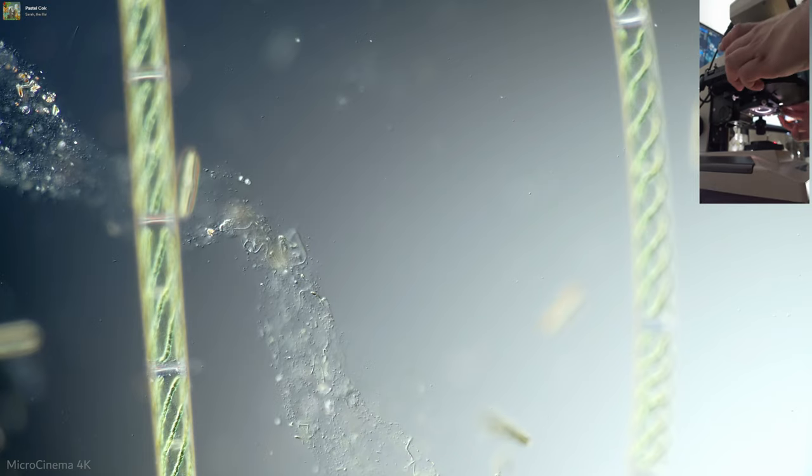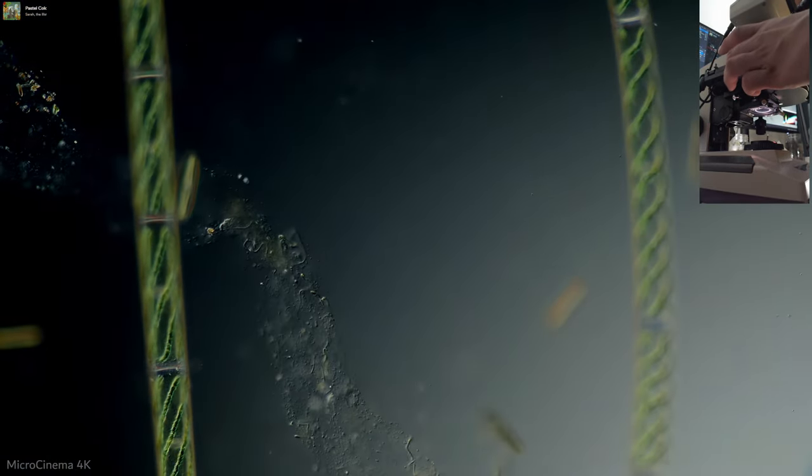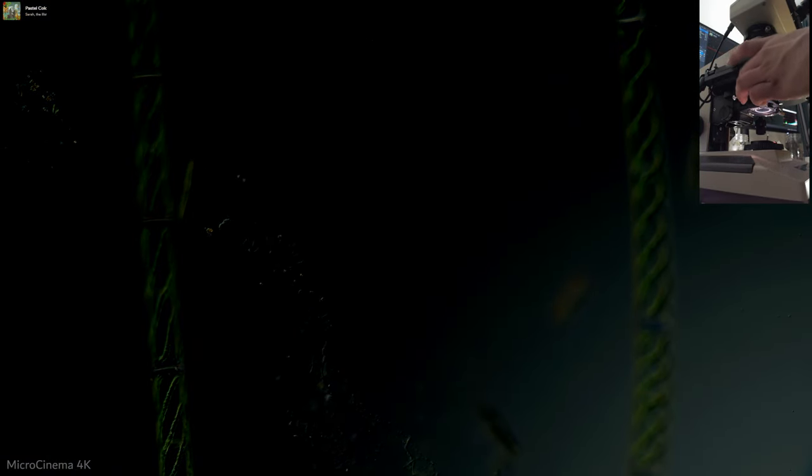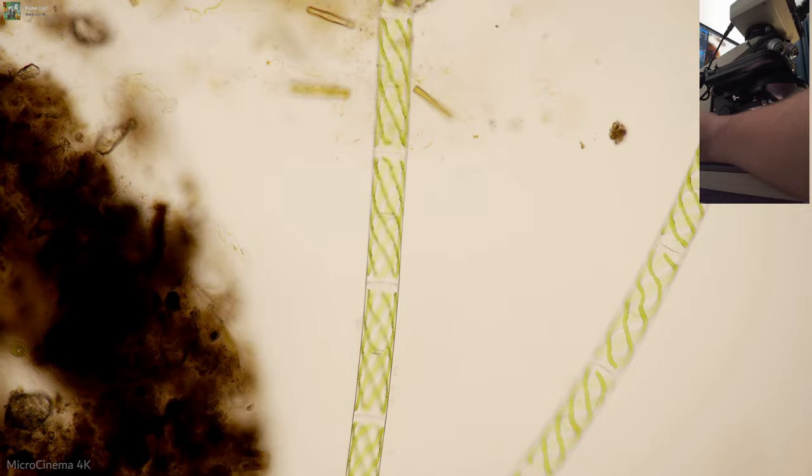Okay, go back to... we'll go back to Brightfield to finish things off. Switch back to the Brightfield position on the condenser. We're already in the right position with the polarizer. Just need to pull the analyzer out and bring our iris down a little bit to get to Brightfield.